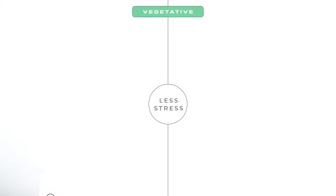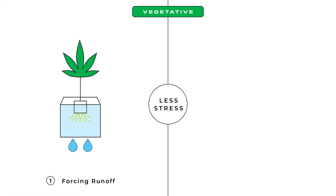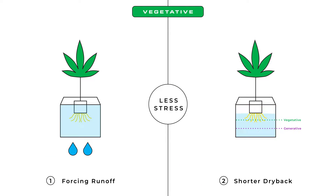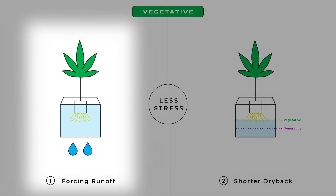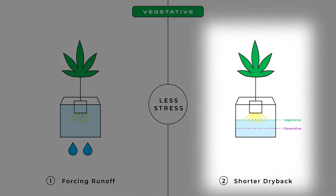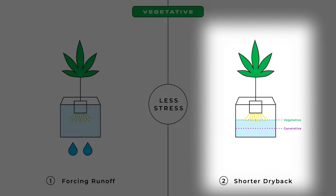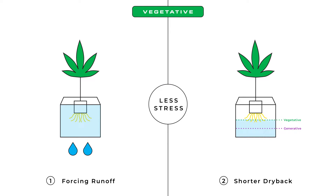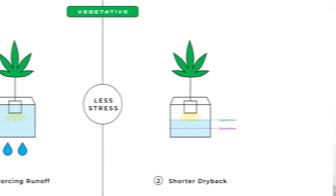To induce vegetative growth we want to alleviate stress by lowering substrate EC. Typically we do this in one of two ways: by forcing more runoff and having a shorter dryback period. Forcing more runoff will flush the media of built-up salts, and a shorter dryback will give the substrate less time to concentrate our substrate EC when drying out.